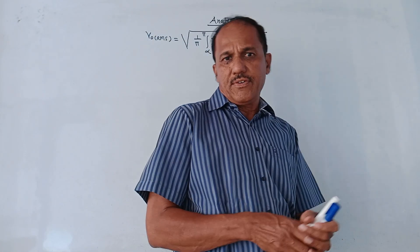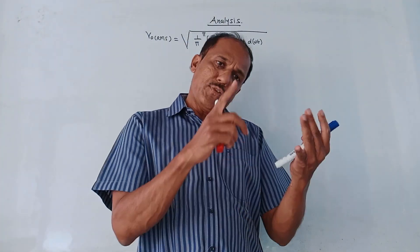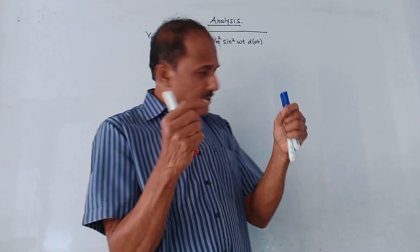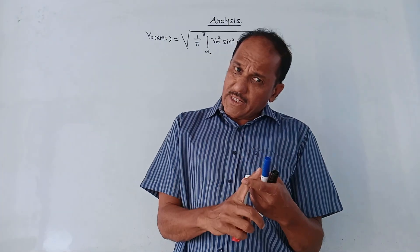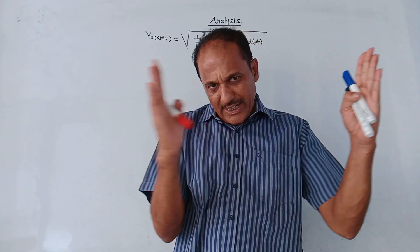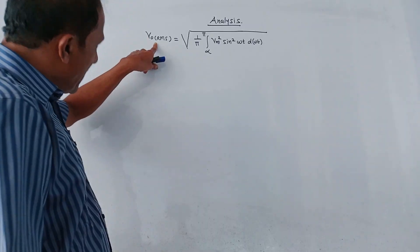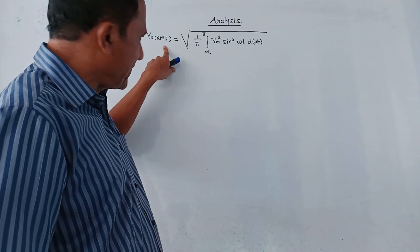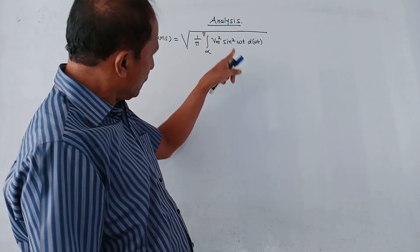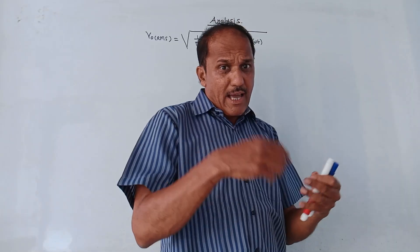Next is the analysis of the single phase full wave AC controller. We will calculate V0_average and V0_rms. As far as average value is concerned, since positive and negative cycles are equal and opposite, if you take the average over the entire period from 0 to 2π, the average output voltage becomes zero. For V0_rms, the formula is: V0_rms = √(1/π · ∫[α to π] Vm² sin²(ωt) d(ωt)).